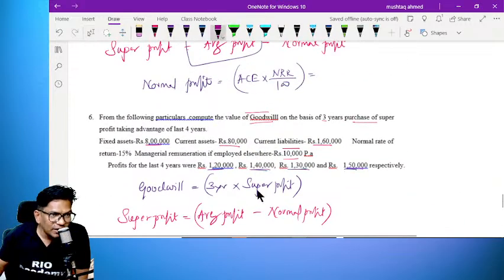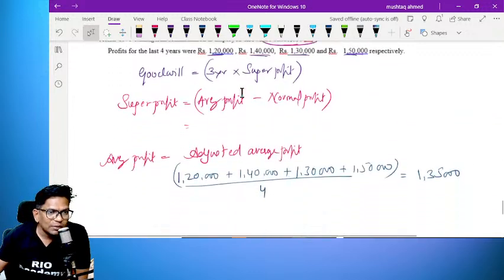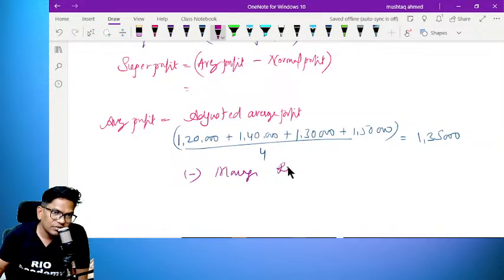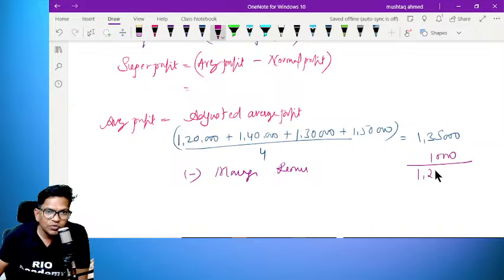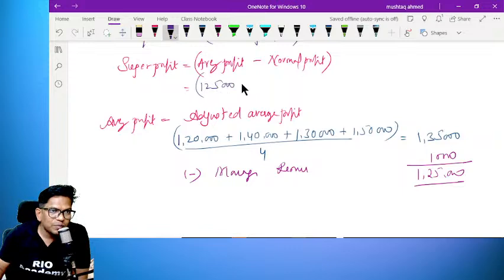Minus managerial remuneration. If they employed elsewhere 10,000 rupees, minus managerial remuneration of 10,000. So 1,35,000 minus 10,000 equals 1,25,000. This is your average profit.